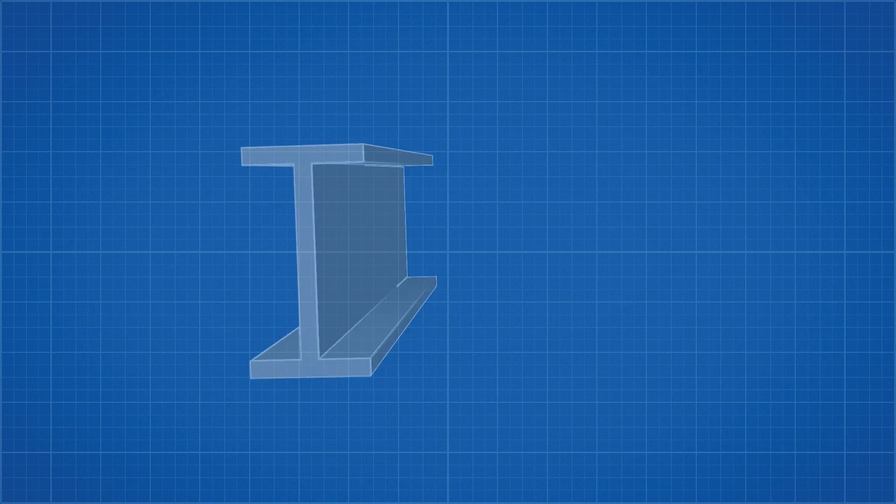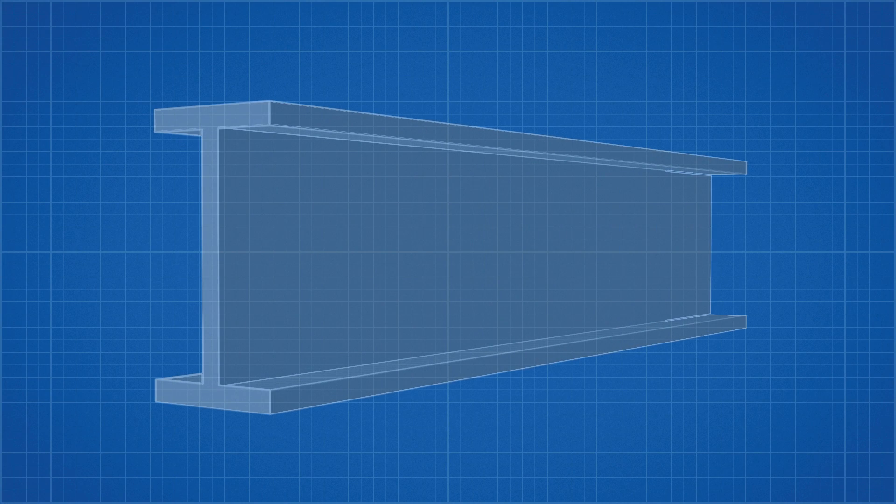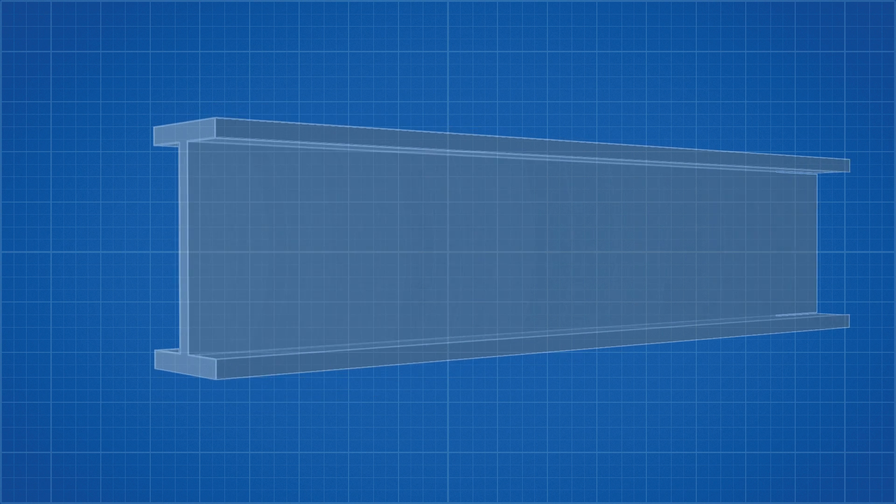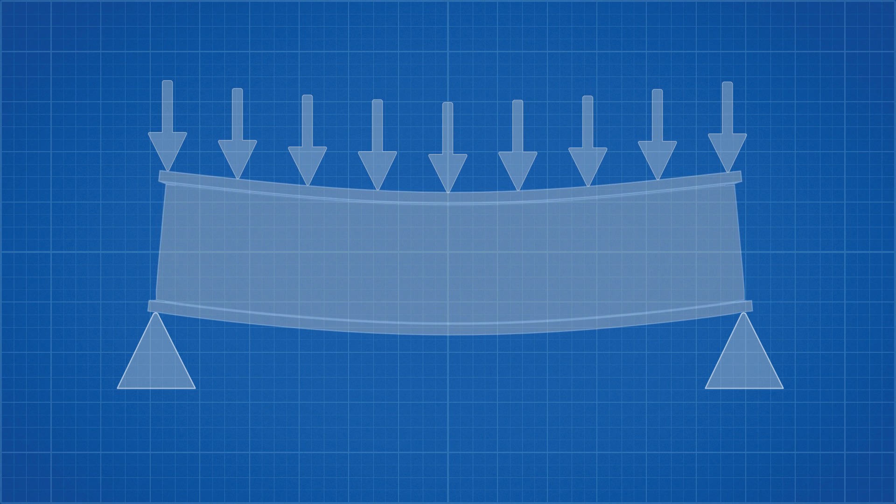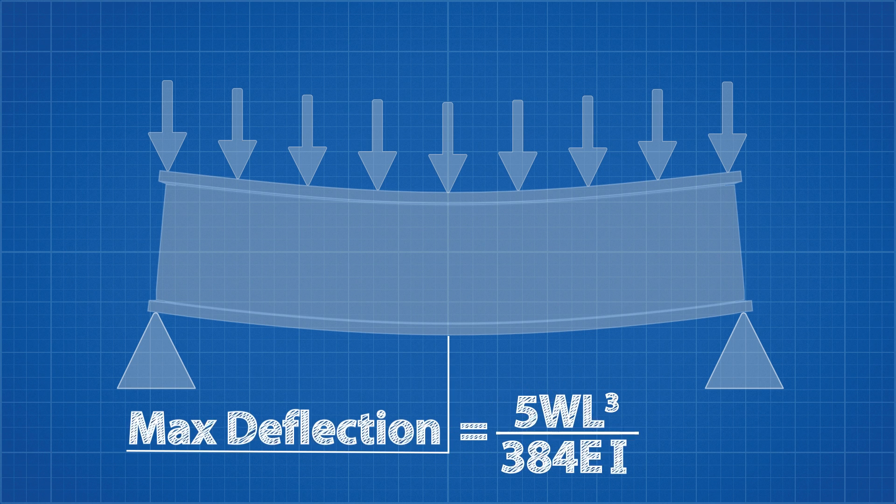The I-beam is designed in that way to handle a maximum bending load while using the least amount of material. Let's look at an I-beam supported on either end to understand more. When we apply a uniform load across this beam, the max deflection will occur here in the middle. We can calculate the deflection with this equation.